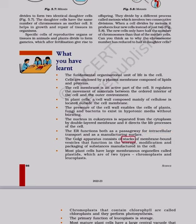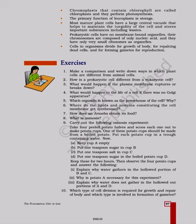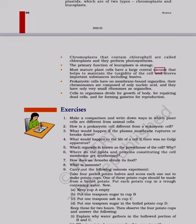The Golgi apparatus consists of stacks of membrane-bound vesicles that function in the storage, modification and packaging of substances manufactured in the cell. Most plant cells have large membranous organelles called plastids, which are of two types — chromoplasts and leucoplasts. Chromoplasts that contain chlorophyll are called chloroplasts and they perform photosynthesis. The primary function of leucoplasts is storage. Most mature plant cells have a large central vacuole that helps to maintain the turgidity of the cell and stores important substances including wastes. Prokaryotic cells have no membrane-bound organelles; their chromosomes are composed of only nucleic acid and they have only very small ribosomes as organelles.